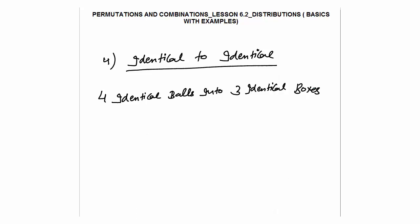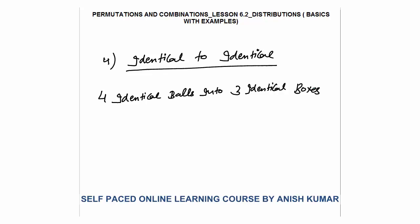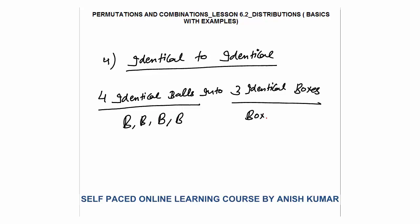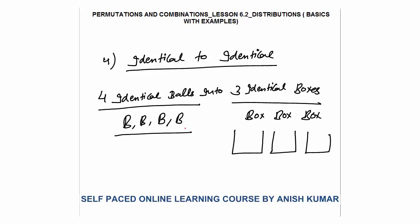The next and last category in distribution is identical to identical. For example, I want to distribute 4 identical balls into 3 identical boxes. The balls are identical, and the 3 identical boxes don't have names — you don't know by looking at them which box is which. They are exactly identical.